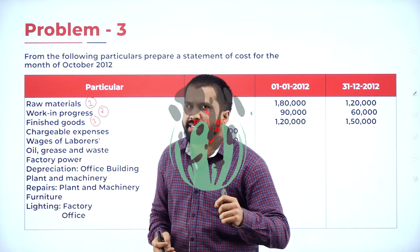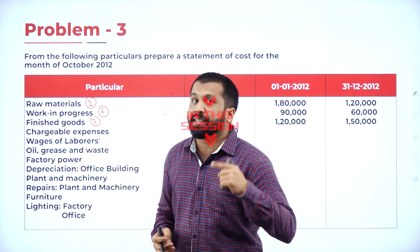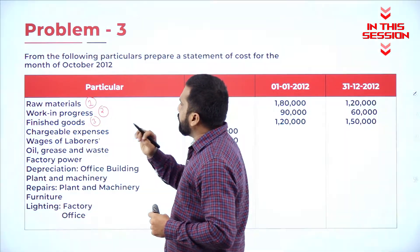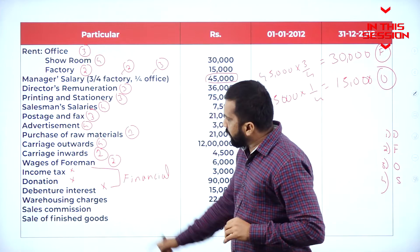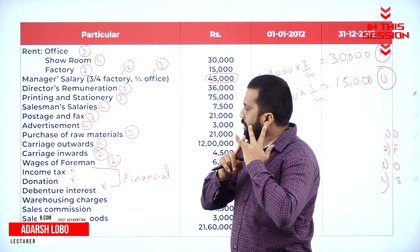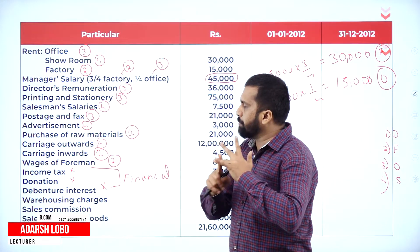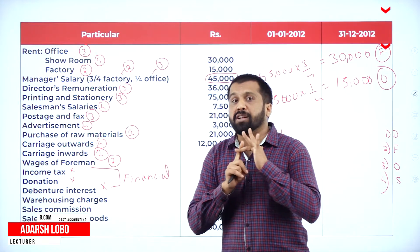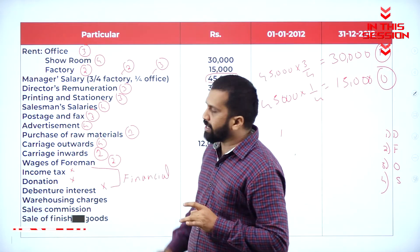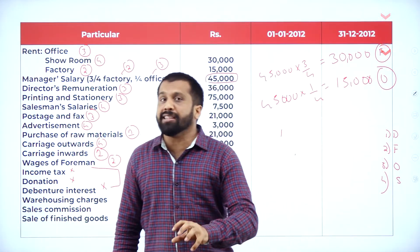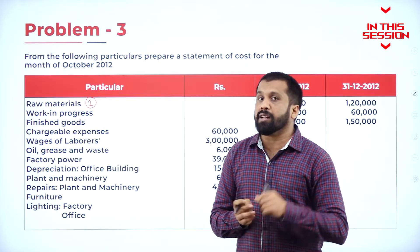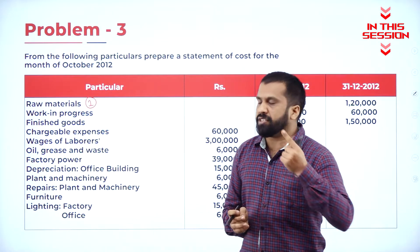Chargeable expenses are nothing but direct expenses in costing. Income tax will not come, donation will not come, debenture interest will not come — these three we consider as financial items. Work in progress comes under factory.